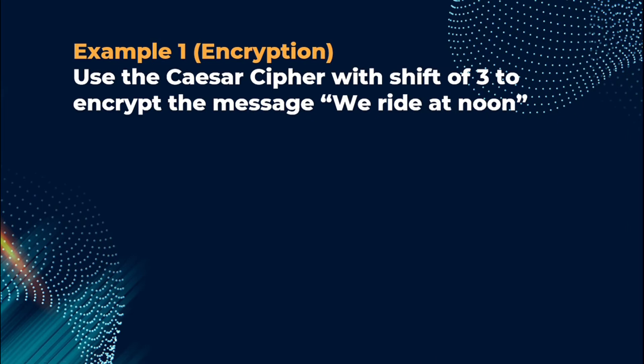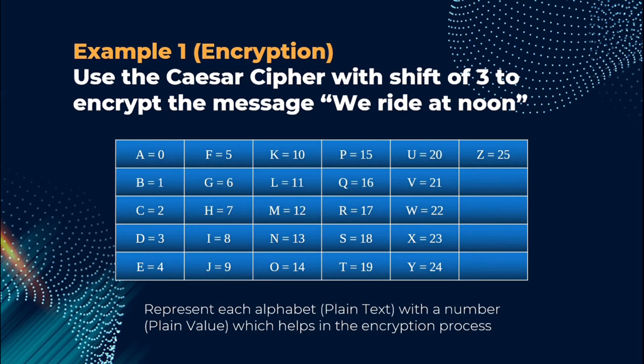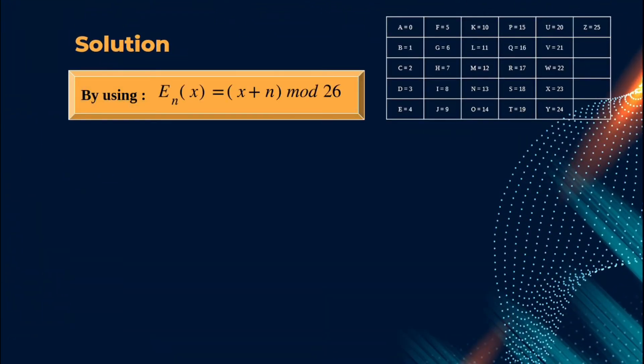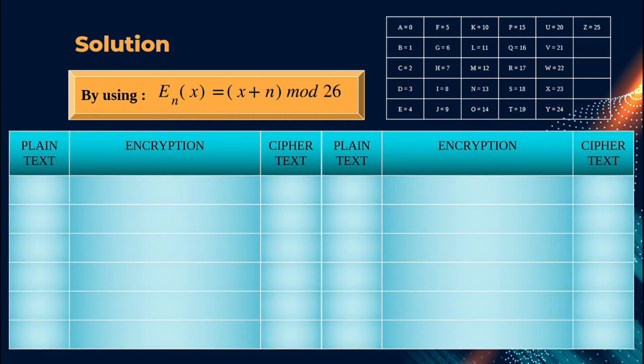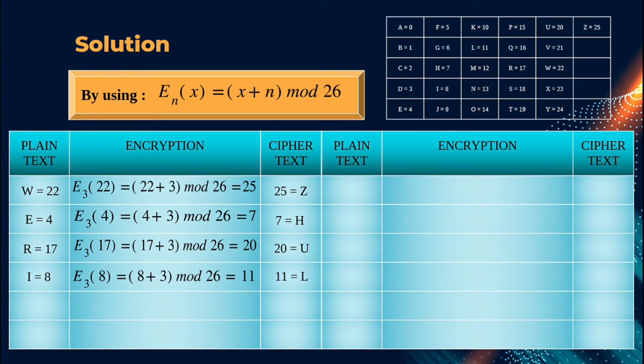Next, we are going to see some examples on encryption and decryption of Caesar cipher. The first example is the encryption for Caesar cipher. The question is, use the Caesar cipher with shift of 3 to encrypt the message we ride at noon. Firstly, we have to represent each alphabet, in other words plaintext, with a number or plain value, which helps in the encryption process as we need a value to be substituted in the formula. The solution is, by using E(X) equals to X plus N modulo 26, where N equals to 3 as shift of 3 was mentioned in the question. The first plaintext is W. By referring to the representation table, W can be represented into a plain value 22. By using the formula, 22 plus 3 modulo 26 equals to 25, and 25 represents letter Z as the ciphertext.